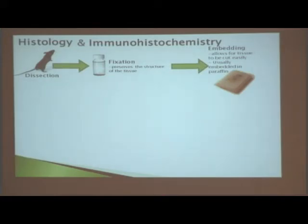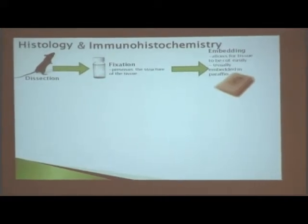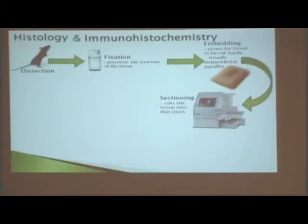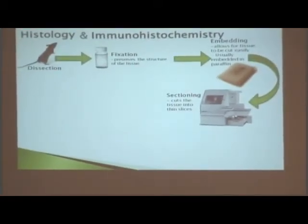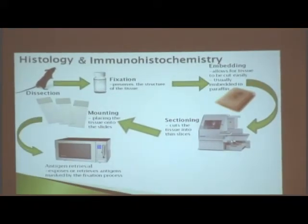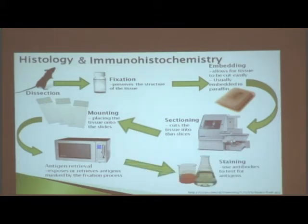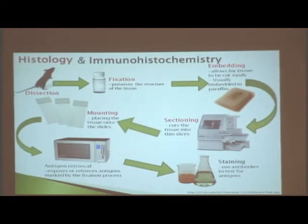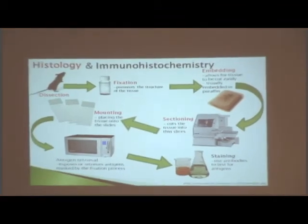Then we embed the tissue, usually in a wax-like structure called paraffin, which gives it a solid texture allowing the tissue to be cut into very thin slices so that we can mount it on tissue slides. Then we use antigen retrieval — I use the microwave to expose antigens that might have been masked by the fixation used to preserve the structure. Then we stain to test for different antigens. So dissection, fixation, embedding, sectioning, and mounting are all part of histology, and immunohistochemistry is the actual exposing of the antigens and then testing for them.